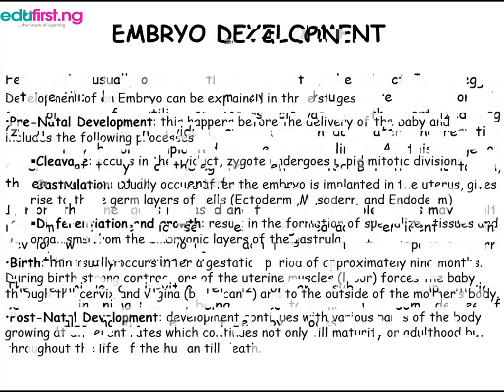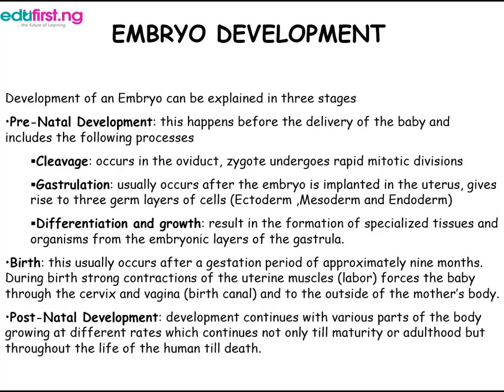Embryo development can be explained in three stages. Prenatal development happens before the delivery of the baby and includes the following processes: cleavage, which occurs in the oviduct as the zygote undergoes rapid mitotic divisions; gastrulation, which usually occurs after the embryo is implanted into the uterus and gives rise to three germ layers — the ectoderm, mesoderm, and endoderm; and differentiation and growth, resulting in the formation of specialized tissues and organs from the embryonic layers of the gastrula.